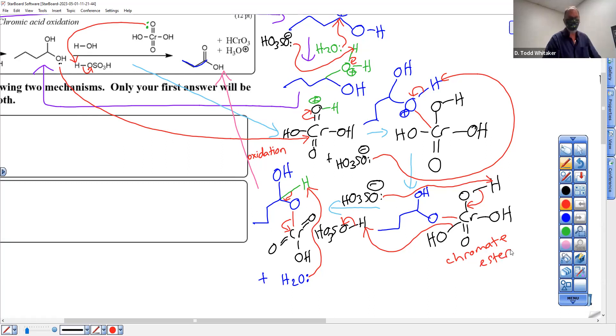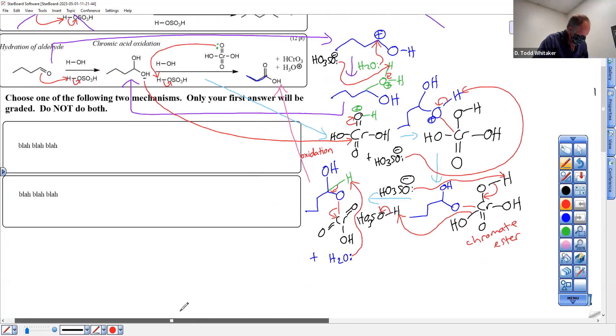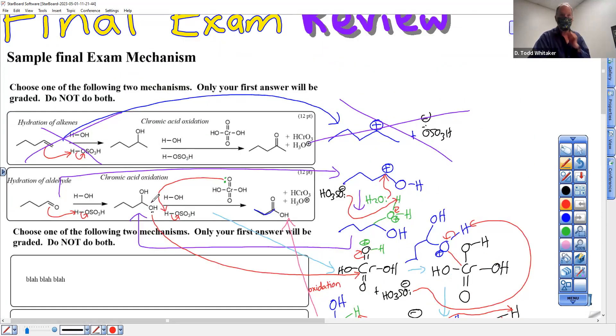So quick review, you're going to be given choices of doing two mechanisms. You'll notice on these two, chromic acid oxidation is there in each one. And then it will happen on Friday. Something very similar to what you saw right there is going to happen on Friday. And remember it's always choose between two boxes, put the answer underneath.